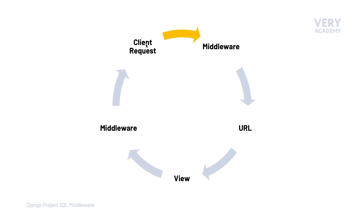The user would type something into the URL in their browser, and that would send a request over to our Django application. One of the first stages of this request is that it will traverse — it will move through — all of the Django middleware that's specified in your application.